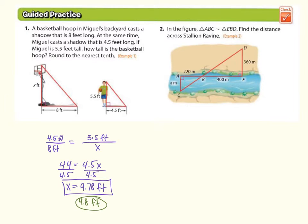Let's move on to number two. Here we have the distance across the ravine. So triangle ABC is similar to triangle ABD. We could not find the distance if we weren't told that information, so you have to look for that. So we've got 220 is corresponding to 400, therefore X is corresponding to 360.